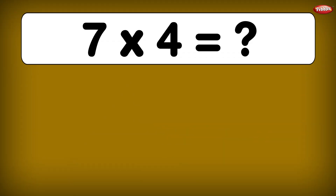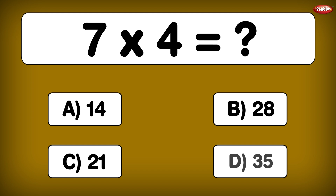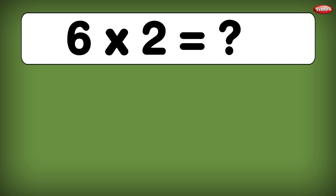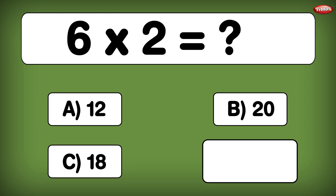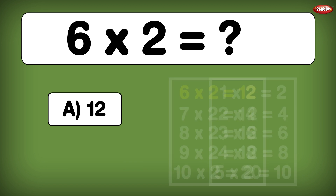7 times 4 is equal to... 7 times 4 is equal to 28. 6 times 2 is equal to... 6 times 2 is 12.